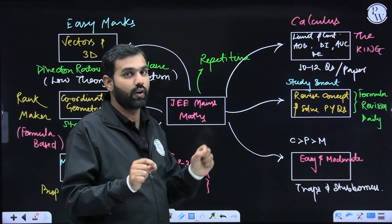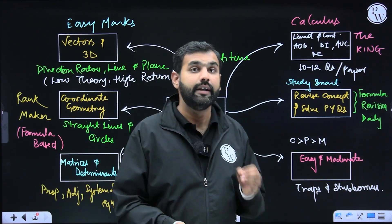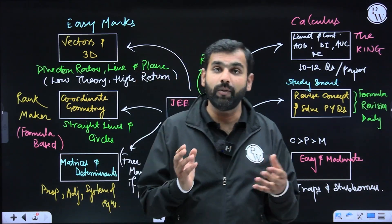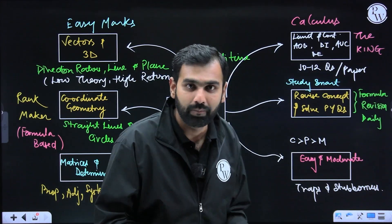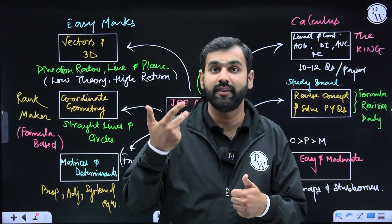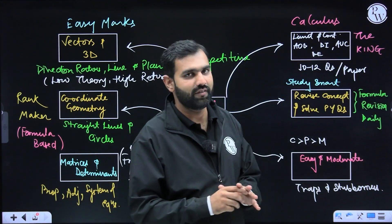Then the fourth section, the king of maths is calculus, of course. 10 to 12 questions per paper are seen from calculus. Half of the paper is from calculus. Can you believe that? Look at these chapters: limits continuity, application of derivatives, area under the curve, definite integration and differential equations.